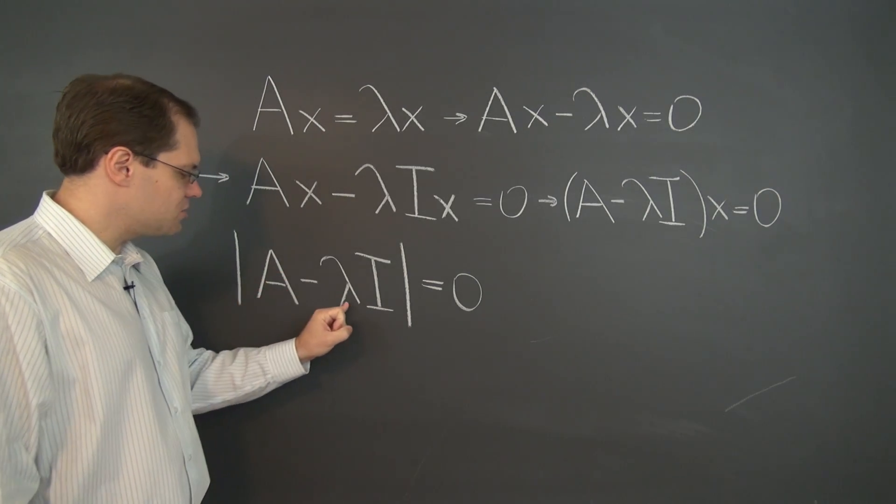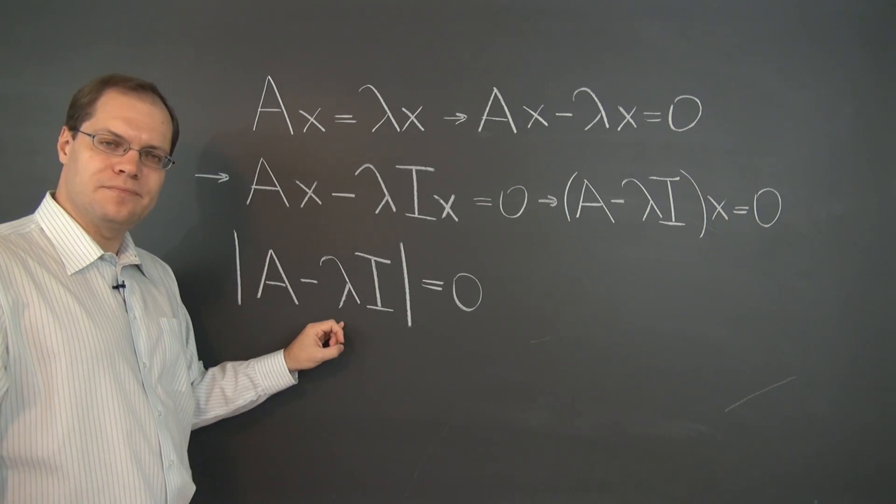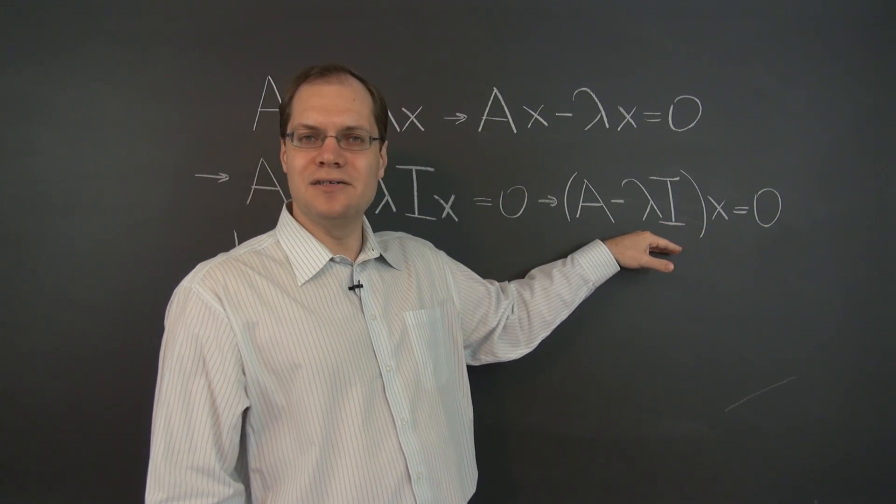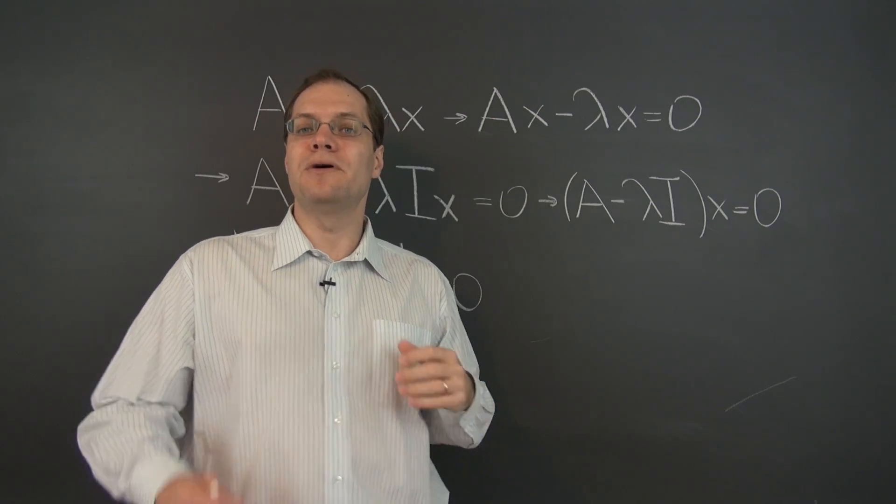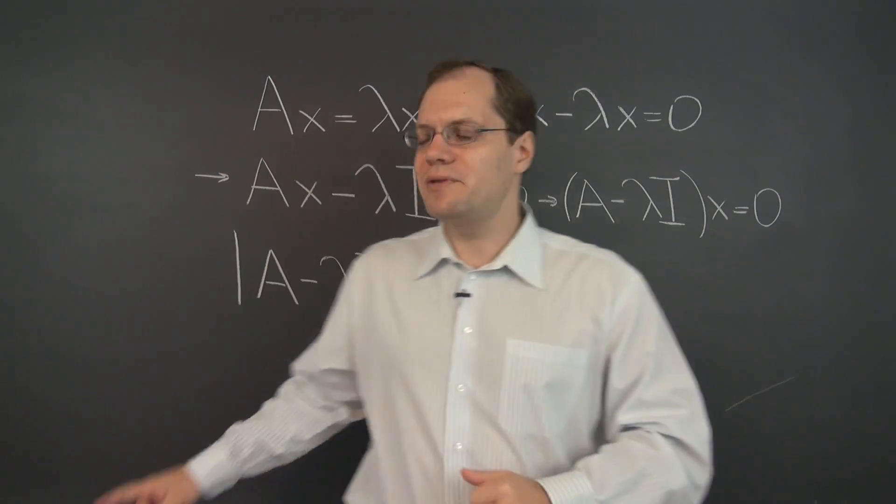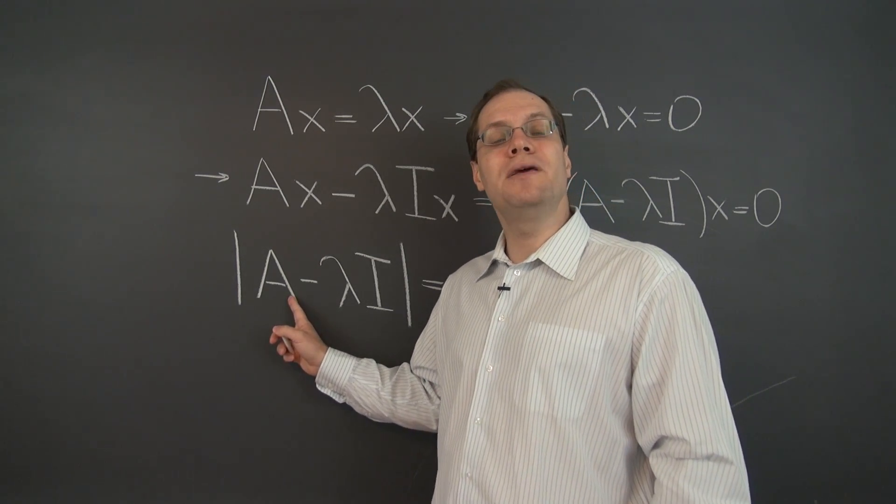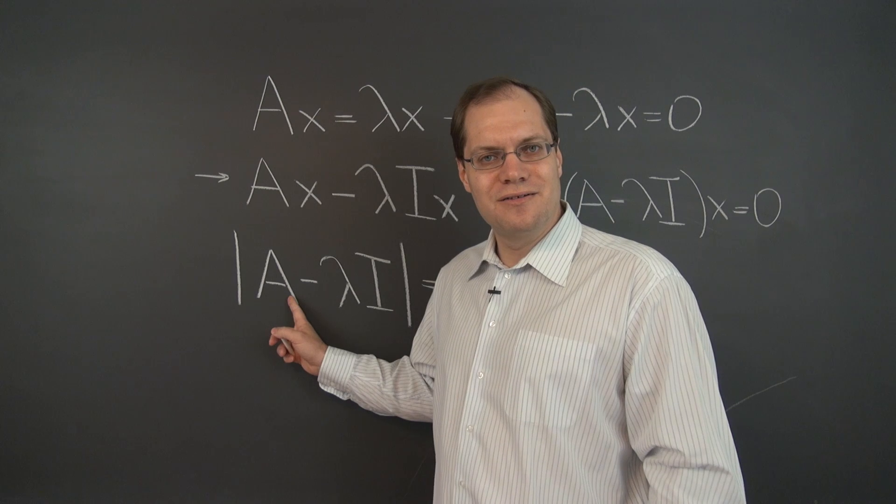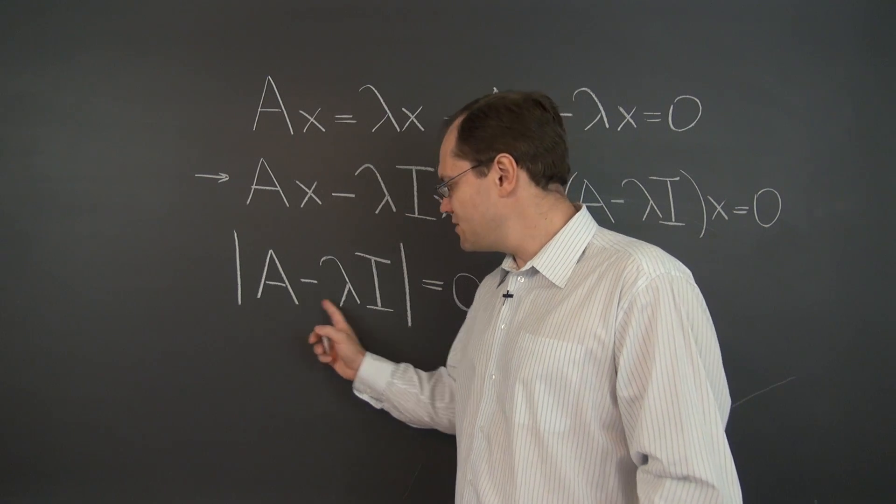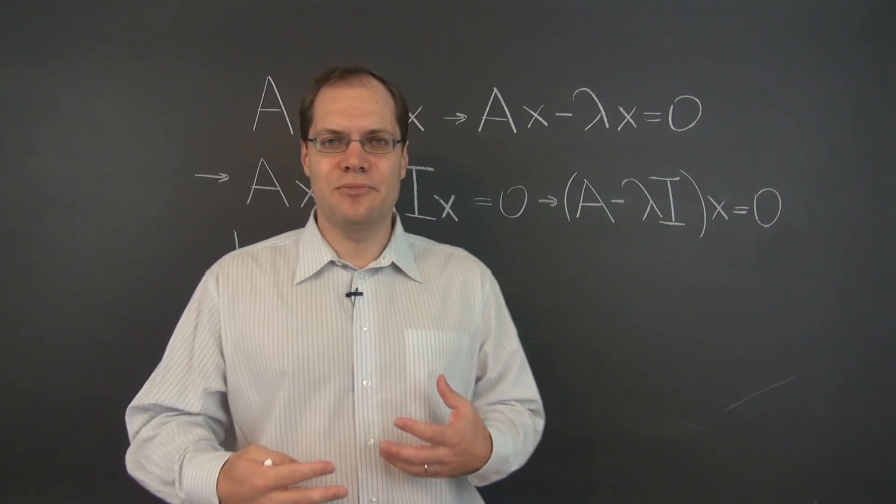And it states: subtract λI from A, equate its determinant to 0, find λ or lambdas, plug them into this equation, and find the null space of the resulting equation. But if you think about it, it's the exact same algorithm as before, because what does it mean to subtract λI from the matrix A? Well, it means subtracting λ from the diagonal of A, from each of the diagonal entries of A. And then finding the determinant of that matrix and equating it to 0. So we've rediscovered the same recipe.